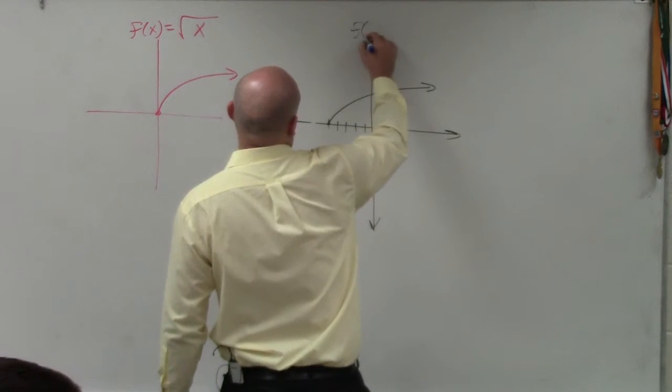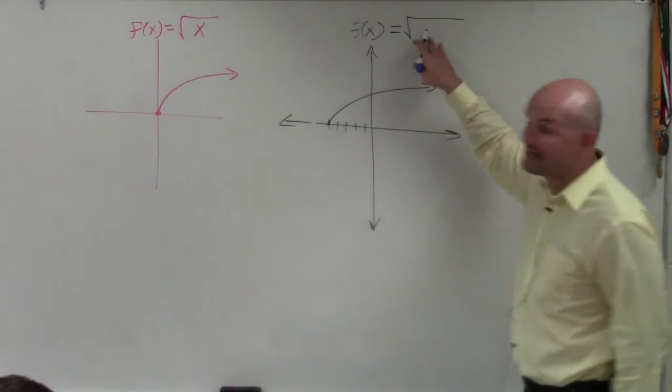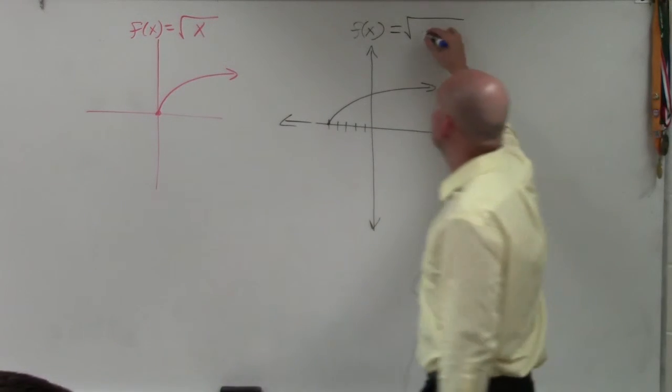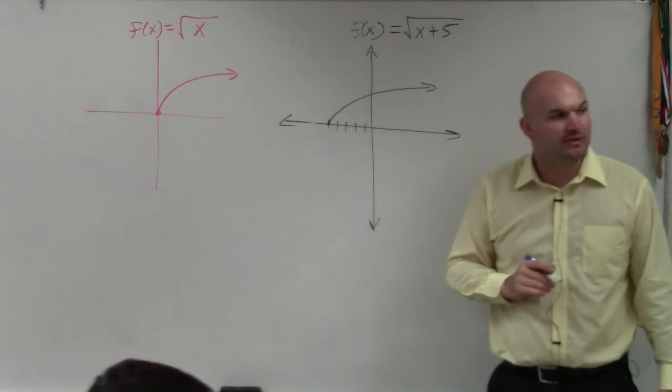So therefore, I could write f of x equals the square root of x. Now, since it's inside, that means it has to be under the radical. So x plus 5 would be your correct answer.